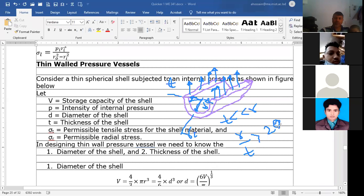Let's define the variables: V is the storage capacity, P is the intensity of internal pressure, D is the diameter of the shell, T is the thickness of the shell, and sigma_T is the permissible tensile stress for the shell material.